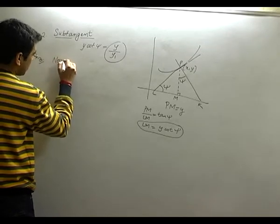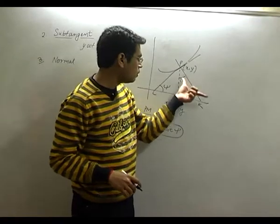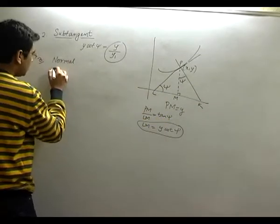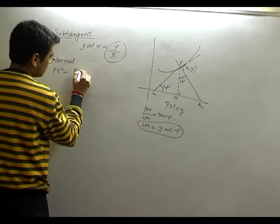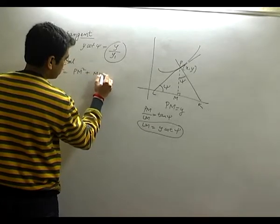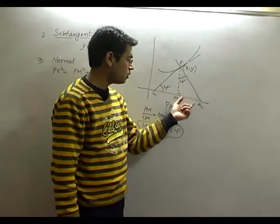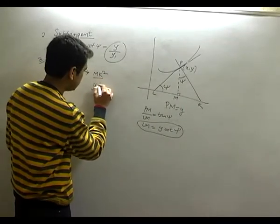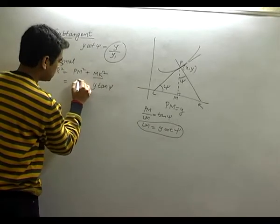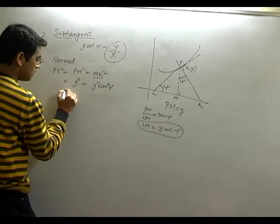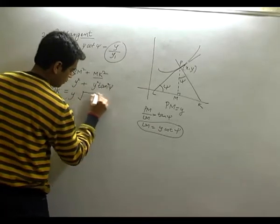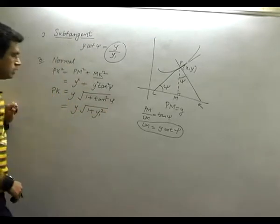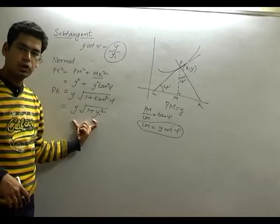Now let's talk about the length of normal. The length of normal here will be PK. Now, normal until it cuts the x-axis — taking triangle PMK, PK squared equals PM squared plus MK squared. Applying Pythagoras: MK upon PM is tan psi, so MK equals y tan psi. PM we know is y, so MK squared is y squared tan squared psi. Taking the square root to get PK: y times under root of (1 plus tan squared psi), which equals y times under root (1 plus y1 squared). This is the length of your normal.